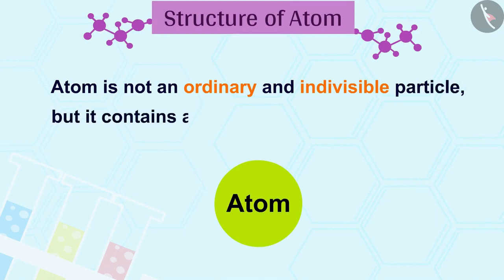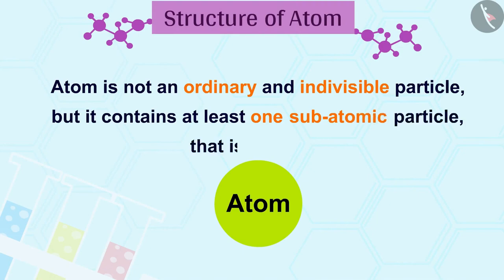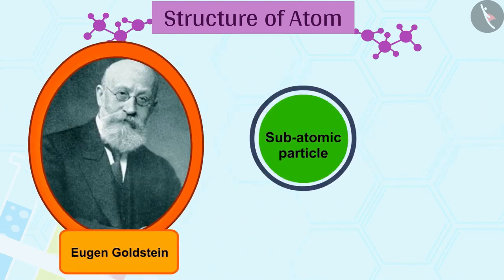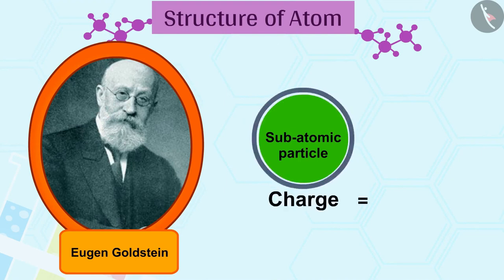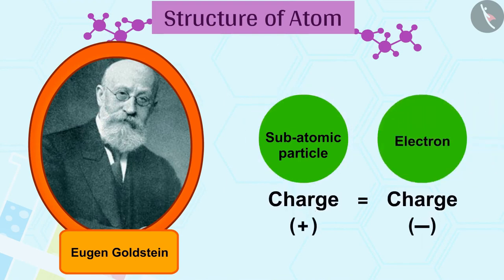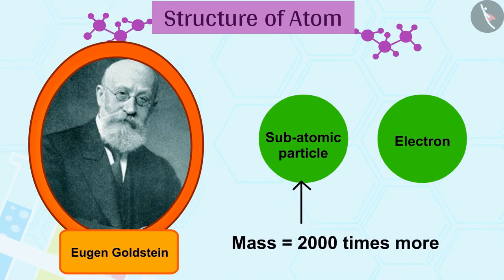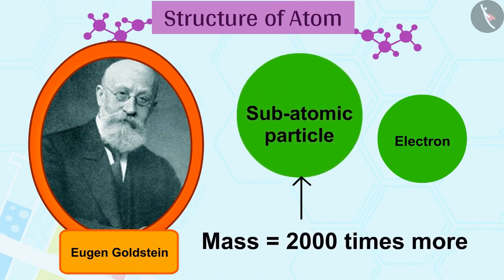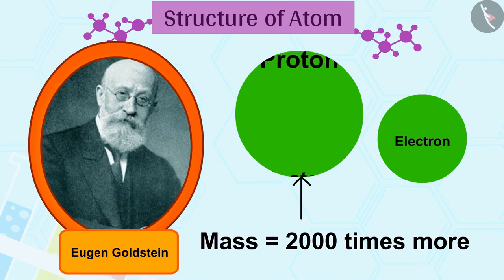But it contains at least one subatomic particle, that is the electron. In 1886, E. Goldstein discovered another subatomic particle whose charge was equal to but opposite to the charge of the electron, and the mass was approximately 2,000 times more than the electron. These particles were named proton.